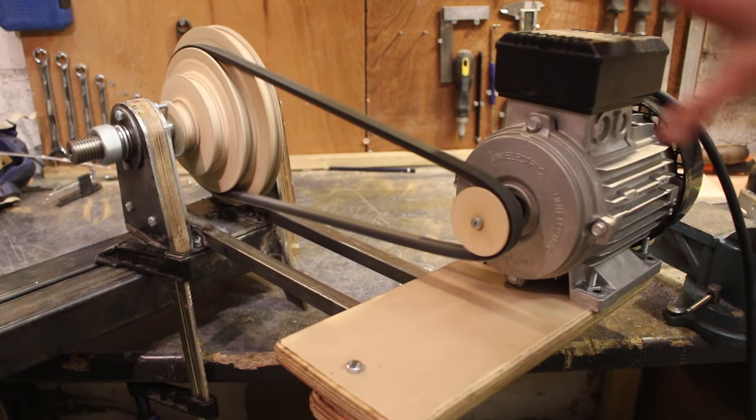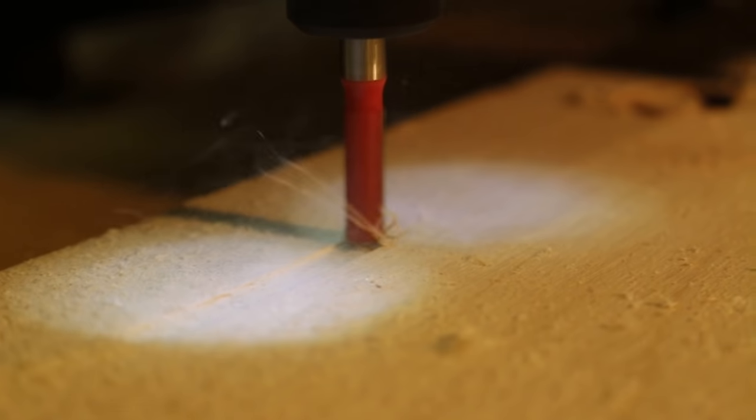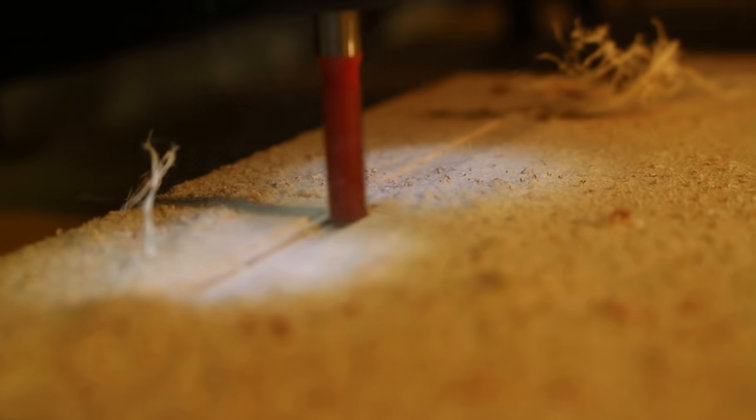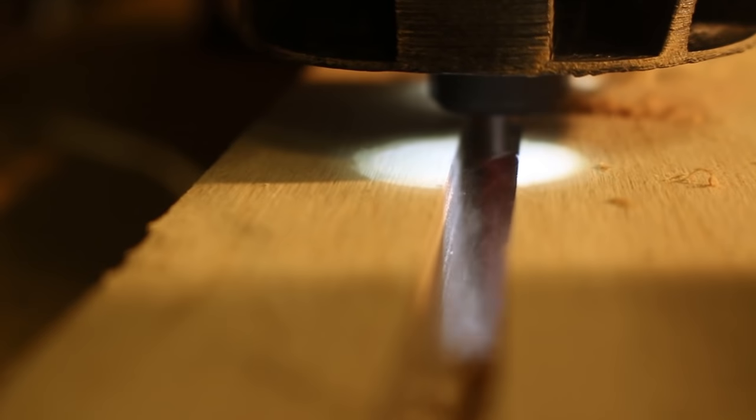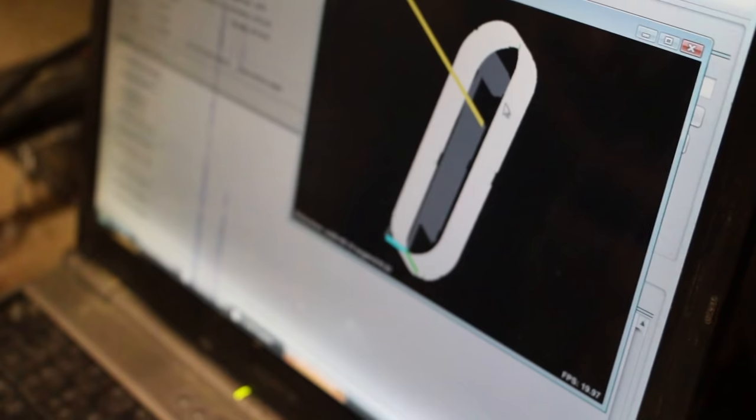It was then time to make the tool rest and first I had to cut out the main piece of the tool rest which is going to actually bolt down onto the base of the lathe. Again I did this using my CNC machine but again you could have also done that just using a jigsaw.